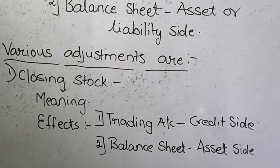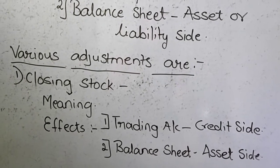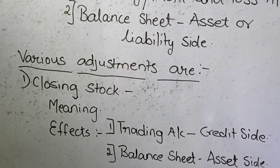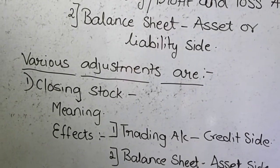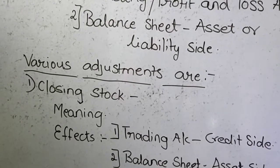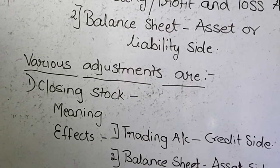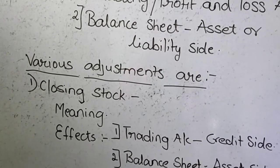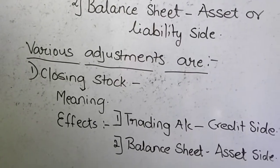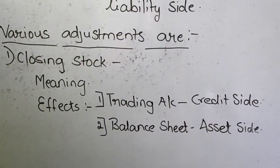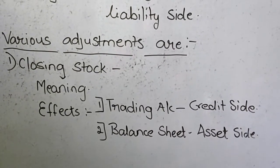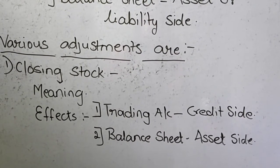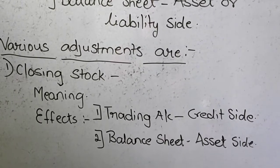The method of recording the closing stock is: if you are given two prices — one is the cost price and another is the market price — then we have to consider the price whichever is low. So we record the closing stock at cost or market price, whichever is less. The two effects of closing stock are: first, on the trading account credit side, and secondly, on the balance sheet asset side.